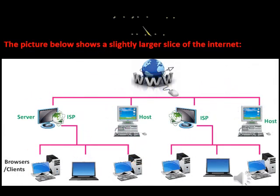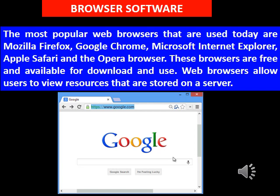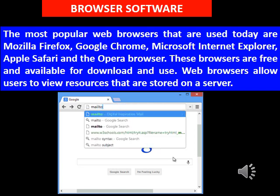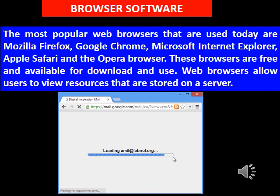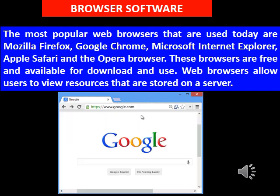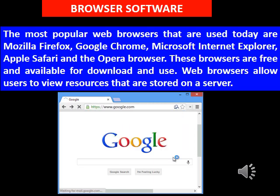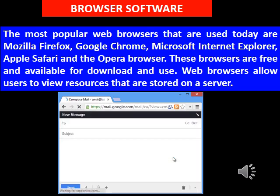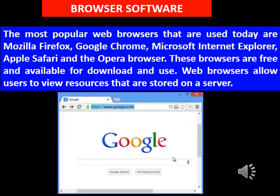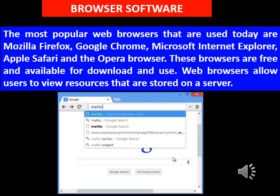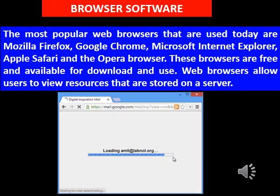A larger view of the internet shows how browsers and clients are connected to host and ISP servers, and then to the World Wide Web. The most popular web browsers used nowadays are Mozilla Firefox, Google Chrome, Microsoft Internet Explorer, Apple Safari, and Opera. These browsers are free and available for download. Web browser software is the main application you install in your system to access the internet and view resources stored on a server.